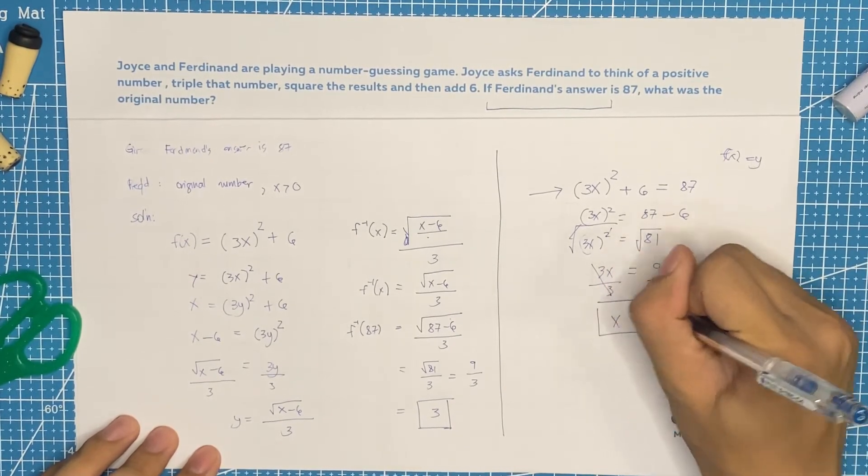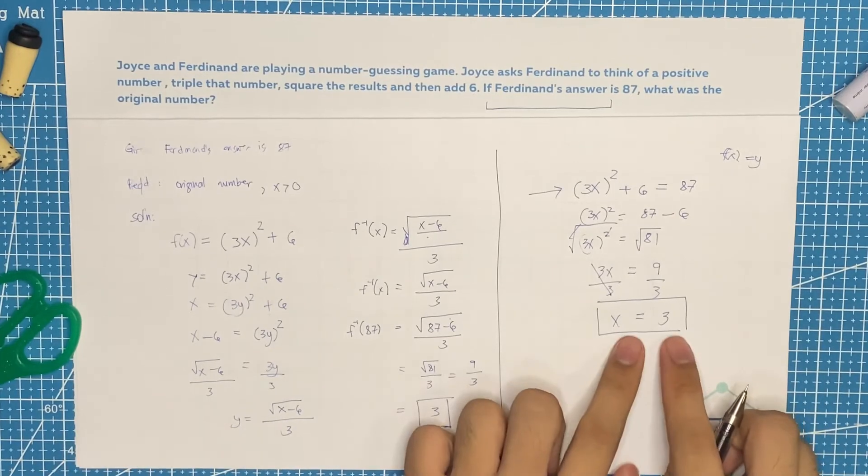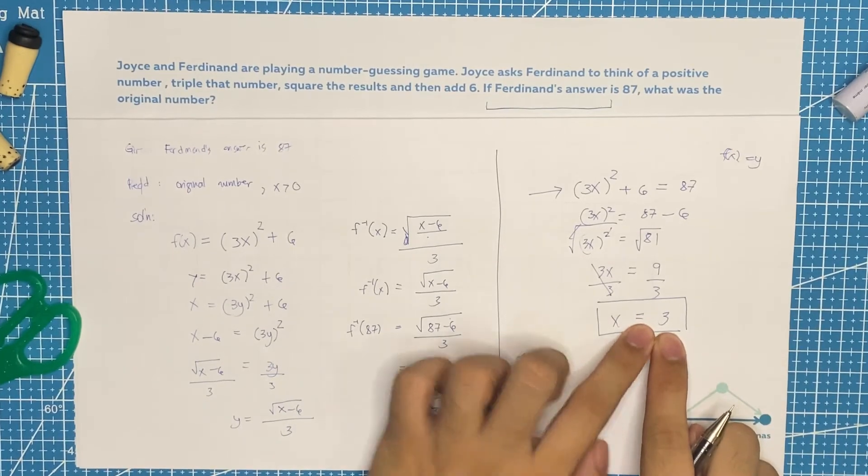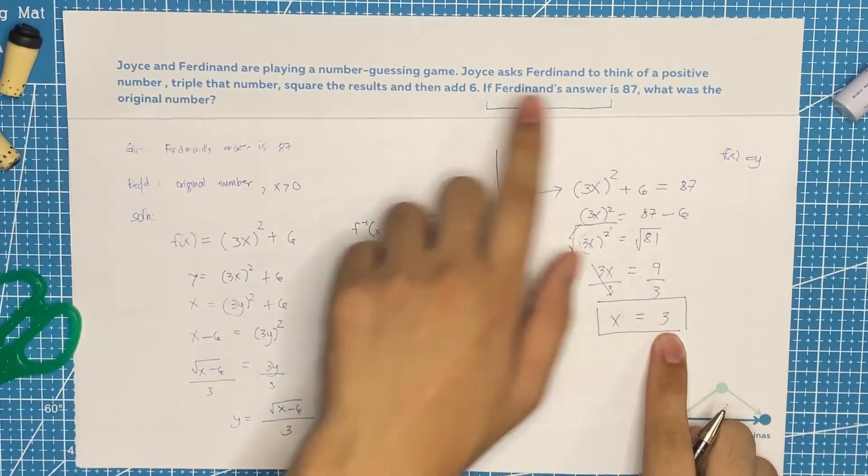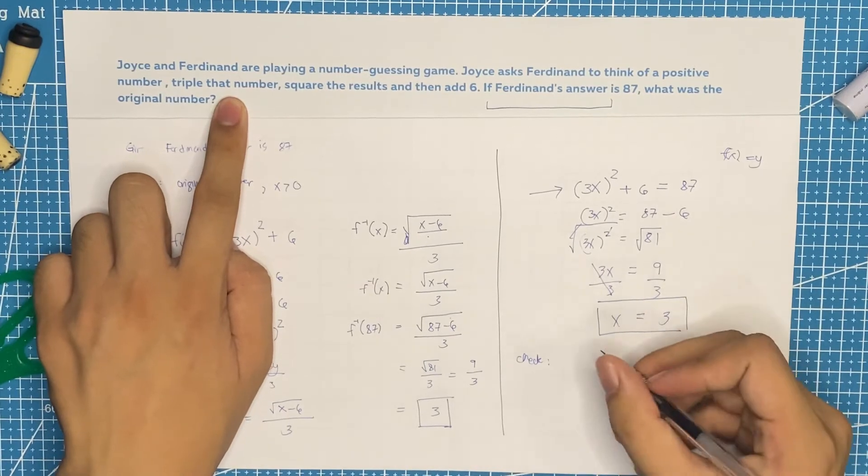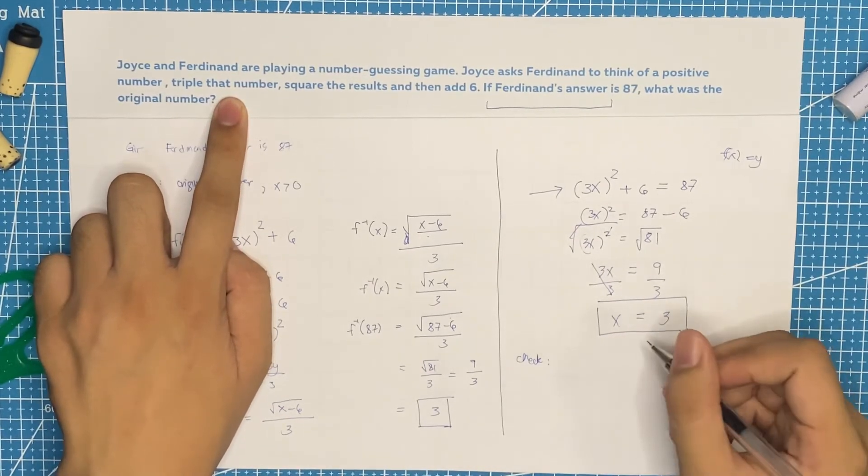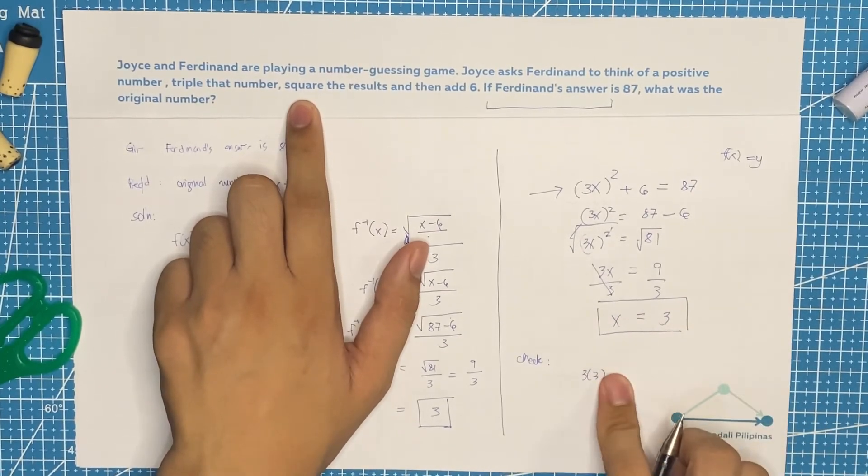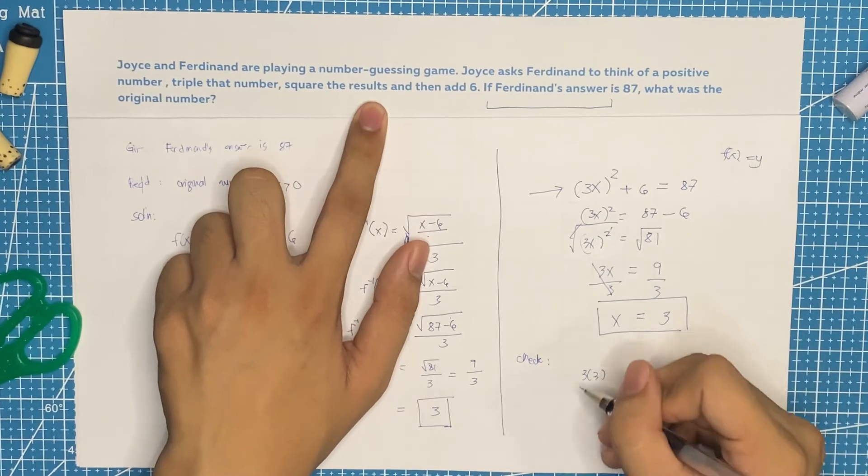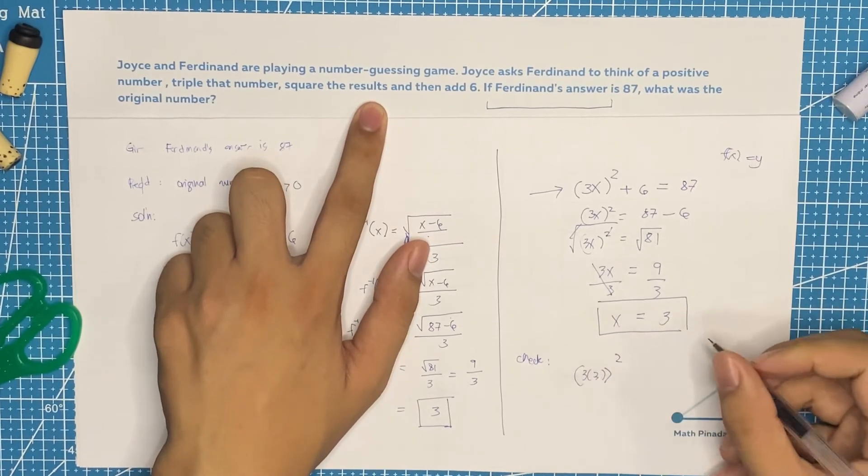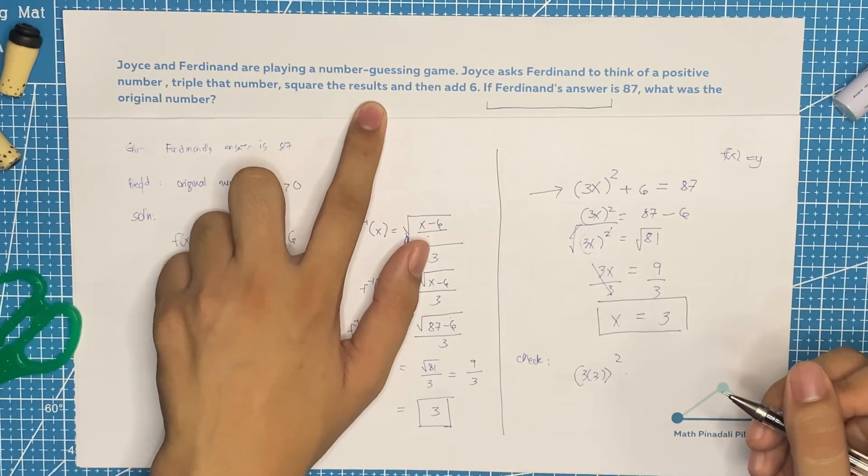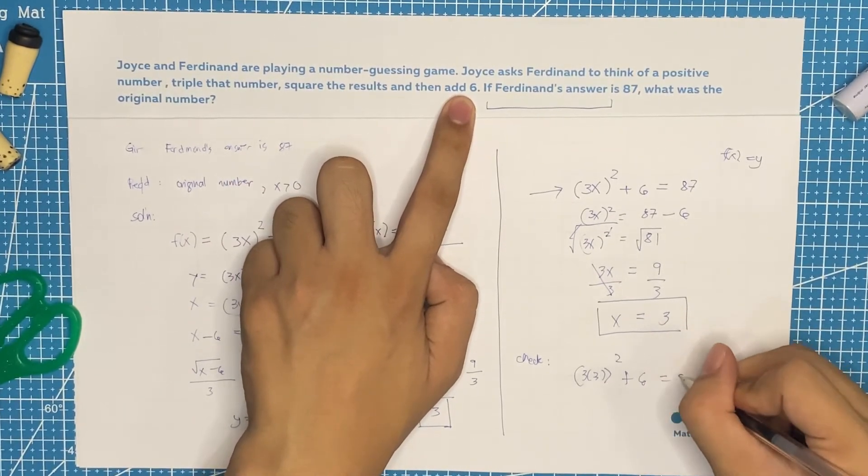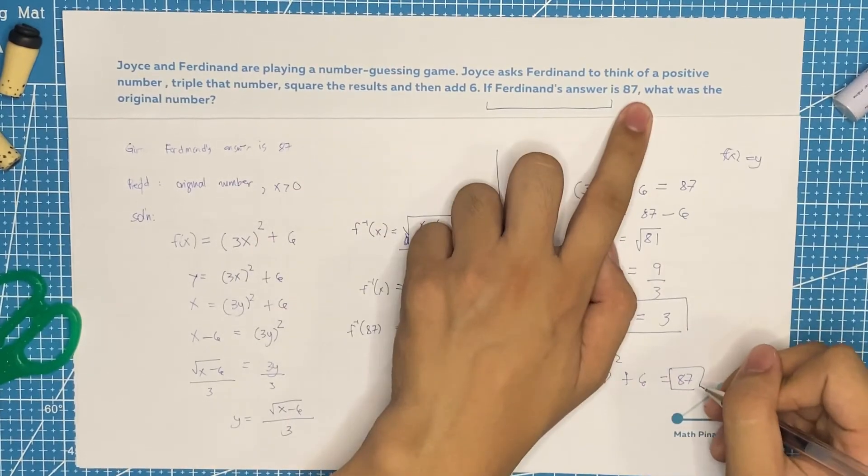So our original number is actually 3. Now, to check. Let's try if it's 3. The original number, the positive number is 3. Triple that number, so that would be 3 times 3, that's 9. Then square the result. 9 squared, that's 81. Then add 6. 81 plus 6, that's 87. So this one is correct, and our final answer would be original number is 3.